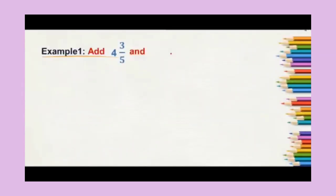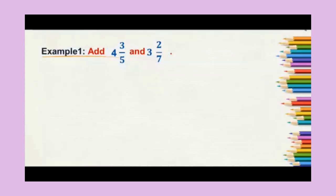Look here. We need to add 4 3/5 and 3 2/7, which are mixed fractions. 4 3/5 is nothing but 4 plus 3/5, and 3 2/7 is nothing but 3 plus 2/7. Now we need to add 4 3/5 and 3 2/7.